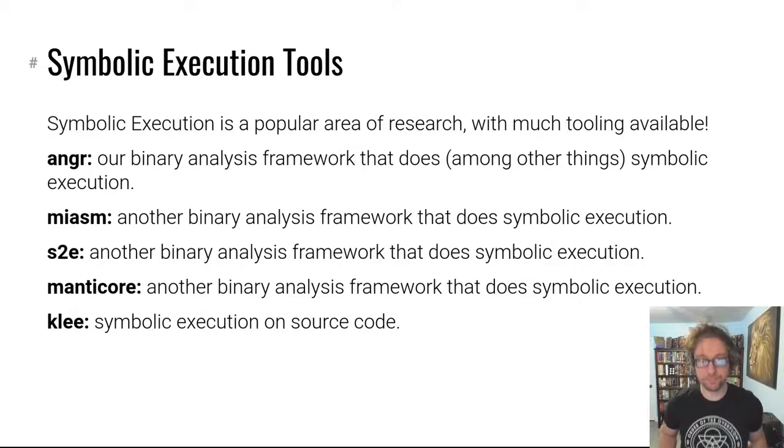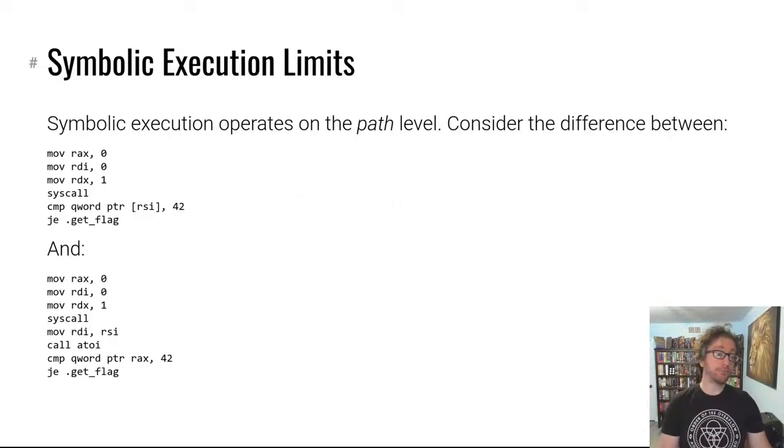So that is awesome. Symbolic execution is the coolest kid on the block, we don't need anything else. We will just use this to explore software, identify vulnerabilities. Unfortunately that is not the case. Symbolic execution has serious serious limitations and these limitations are that it has to follow every path to understand what is going on. It's a dynamic analysis, right?